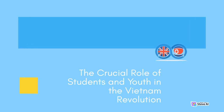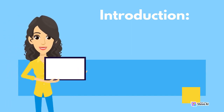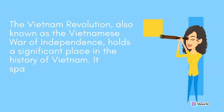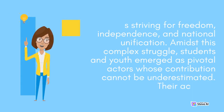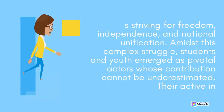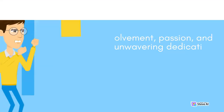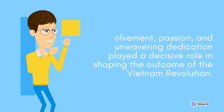The Vietnam Revolution, also known as the Vietnamese War of Independence, holds a significant place in the history of Vietnam. It spanned from 1945 to 1975 and involved an intricate interplay of forces striving for freedom, independence, and national unification. Amidst this complex struggle, students and youth emerged as pivotal actors whose contribution cannot be underestimated. Their active involvement, passion, and unwavering dedication played a decisive role in shaping the outcome of the Vietnam Revolution.